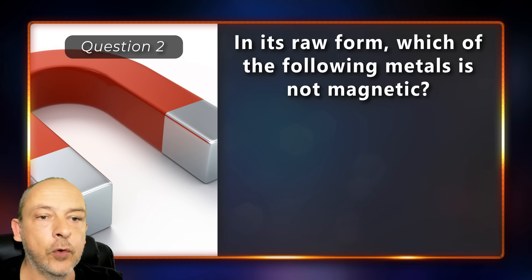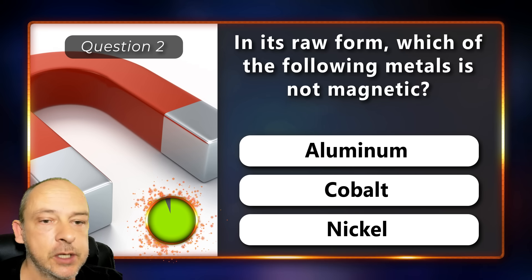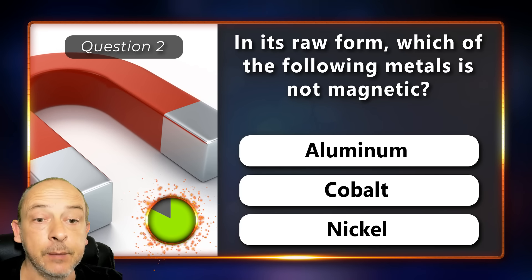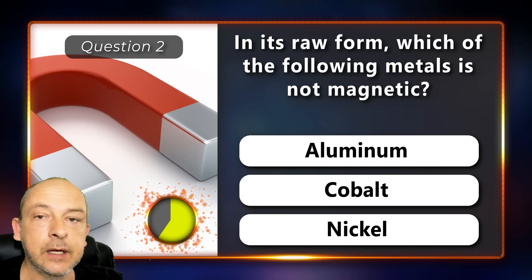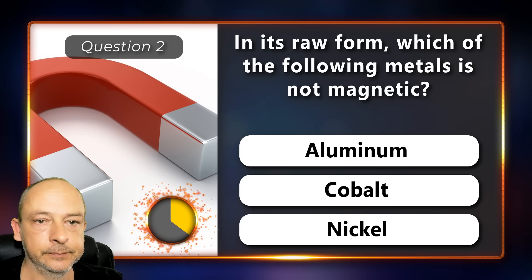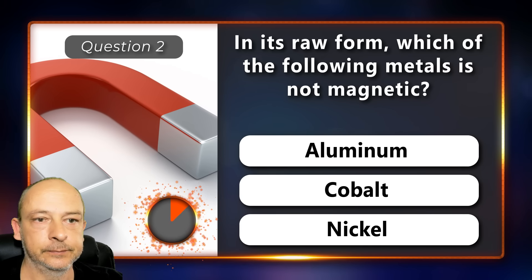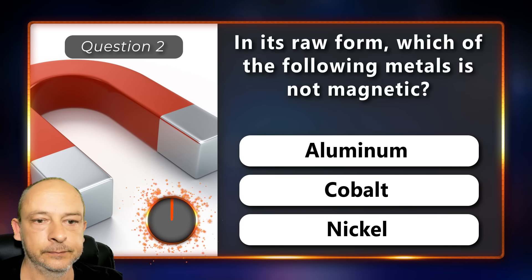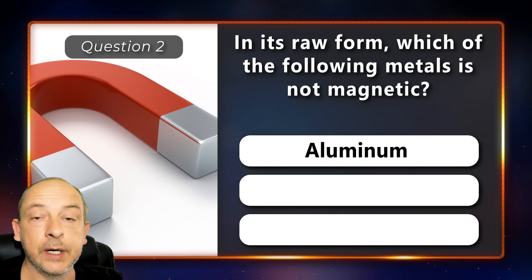In its raw form, which of the following metals is not magnetic: aluminium, cobalt, or nickel? The answer is aluminium.